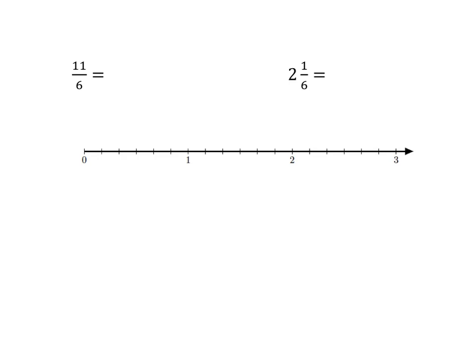Let's check that you managed to get that. Let's start with eleven-sixths and see where that is on the number line. Our number line has been divided up into sixths, so that makes it easy. There are six of them there, and then we need seven, eight, nine, ten, eleven. So our eleven-sixths is going to sit over here on our number line. And what is that as a mixed number? Six goes into eleven once with five left over, so it's one and five-sixths.